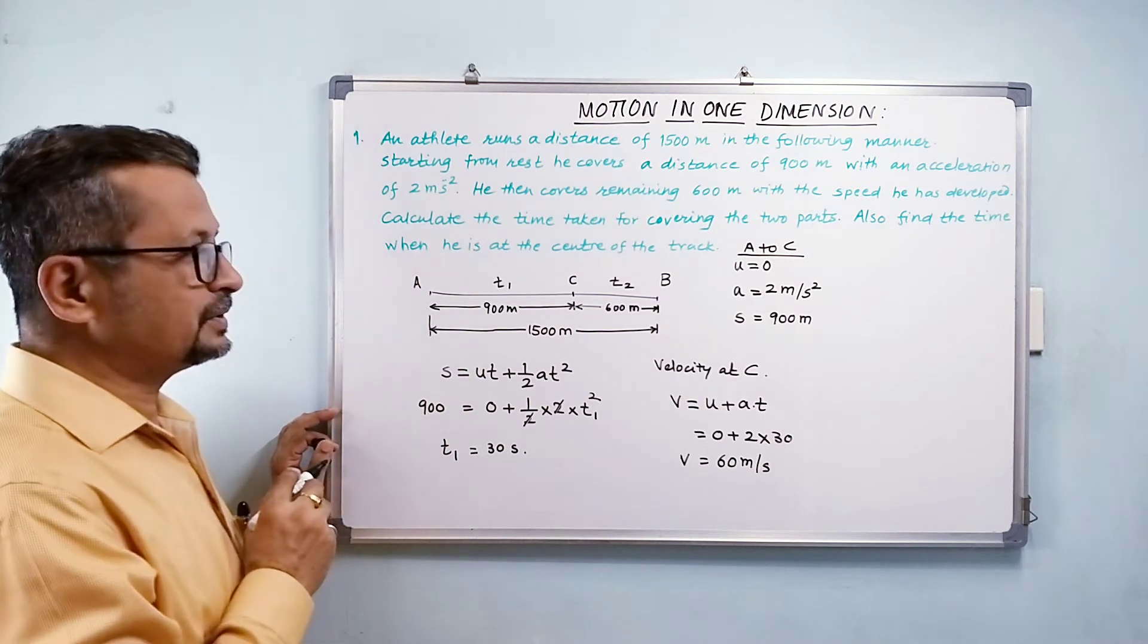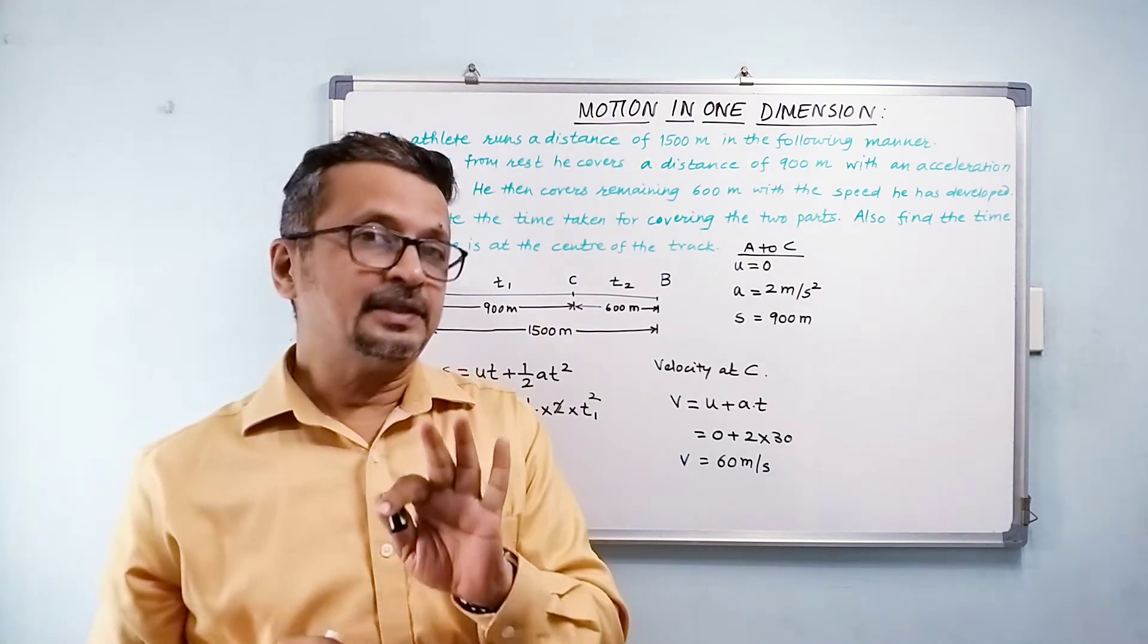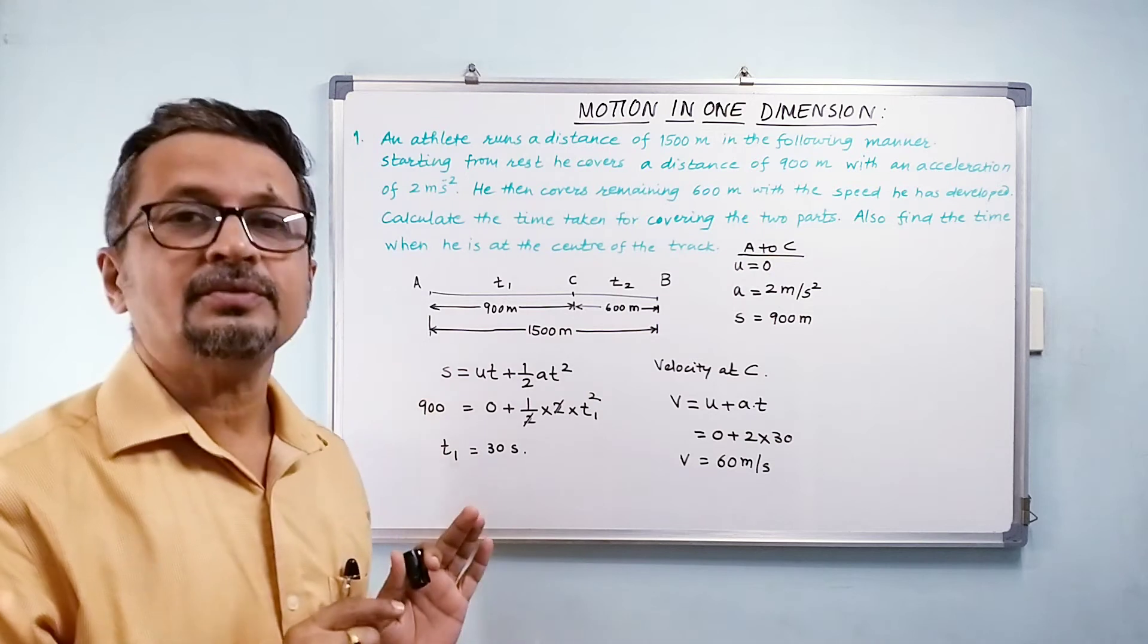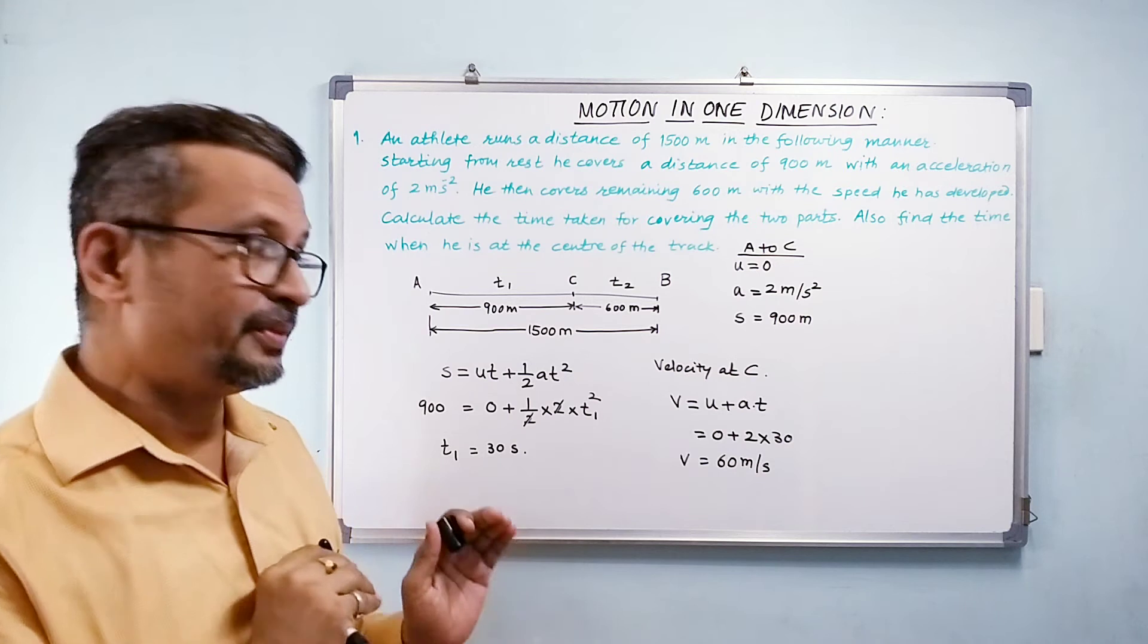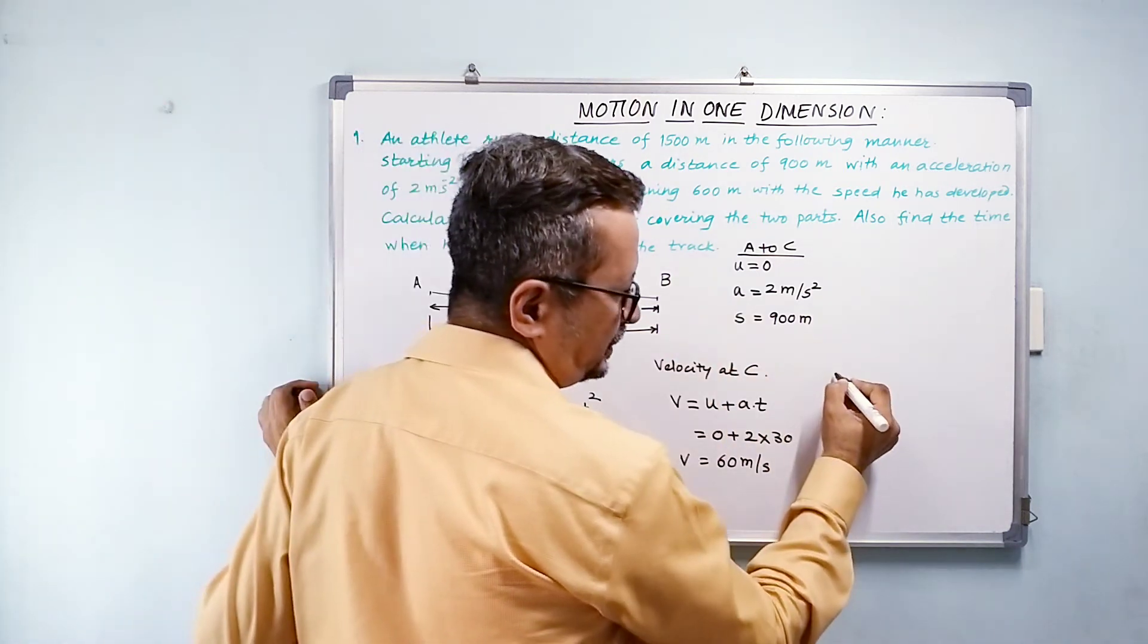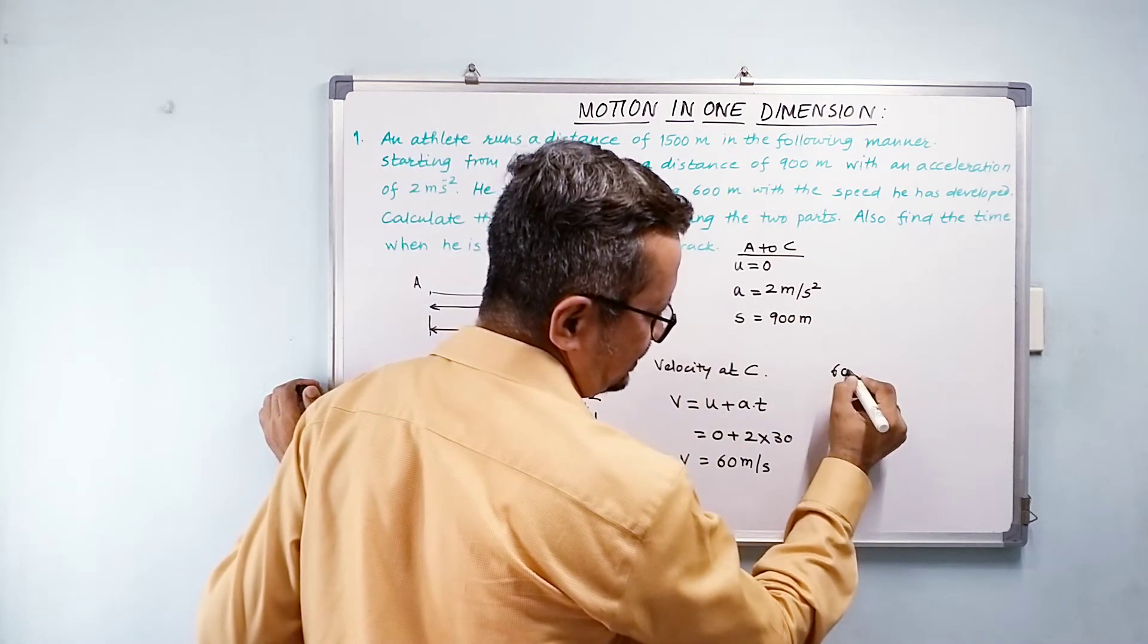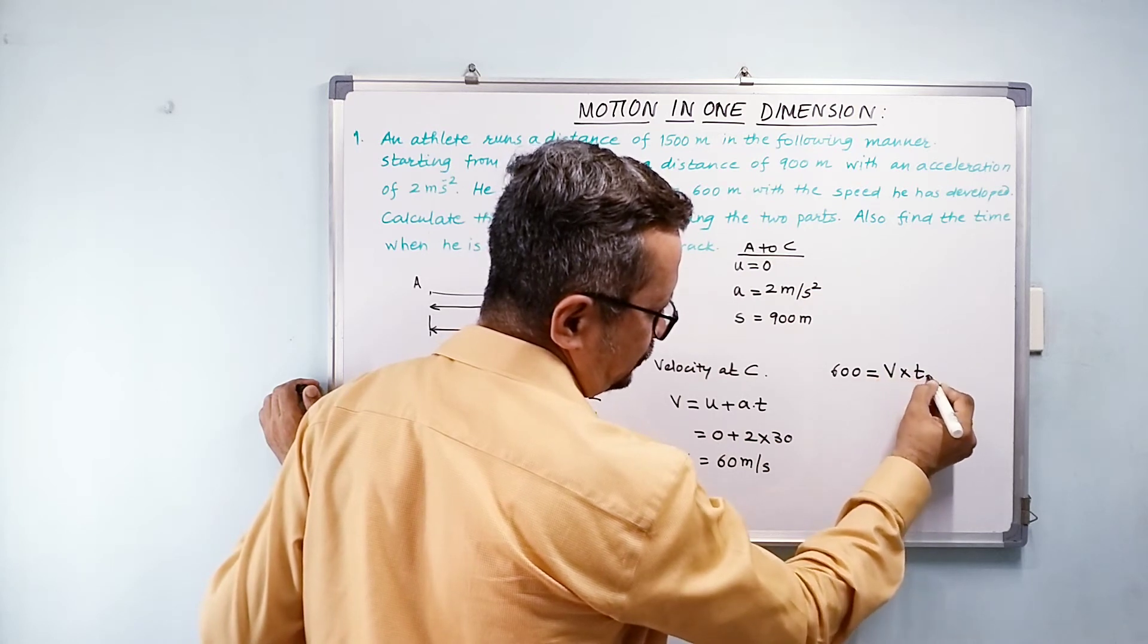Now what about this time? Now for covering the remaining 600 meters, this athlete is going to maintain the same speed. He is going to maintain the same speed. So now for that time, my distance 600 equals velocity into time that is t2.